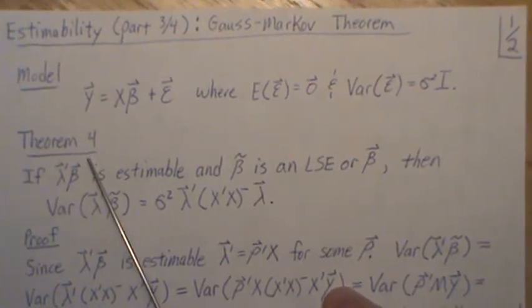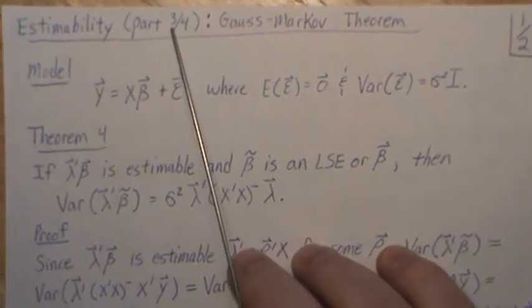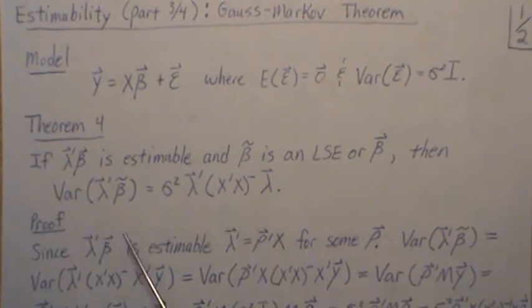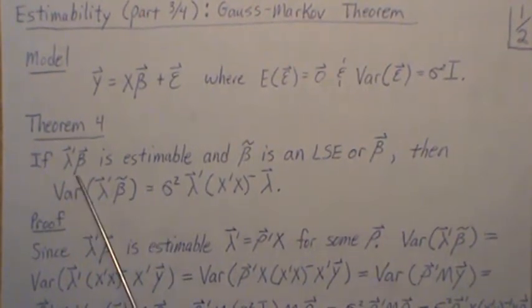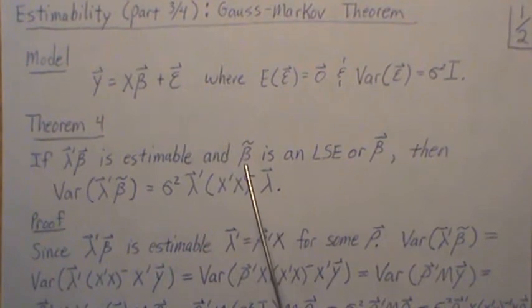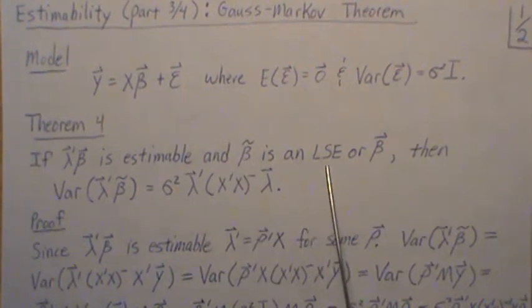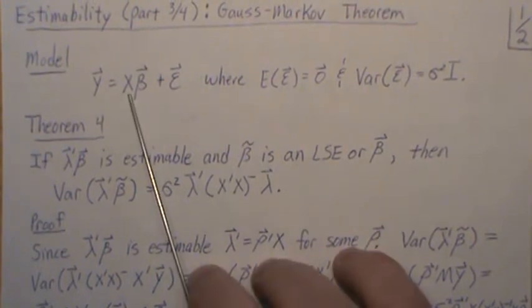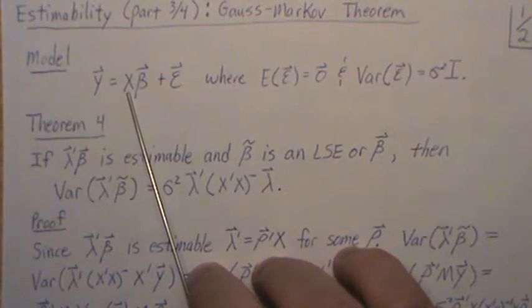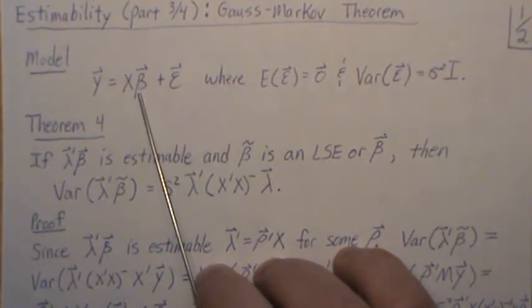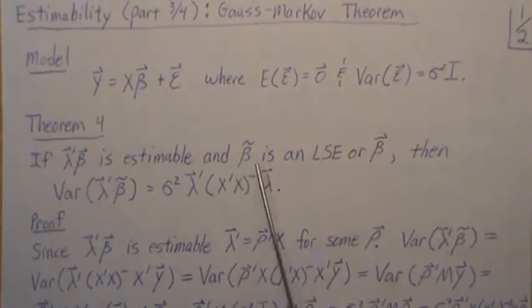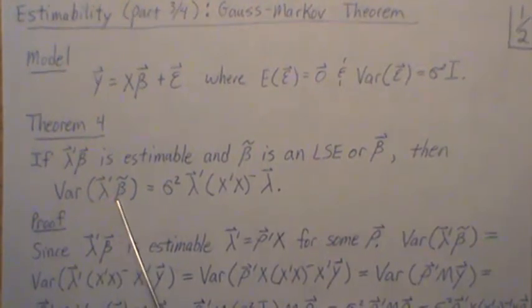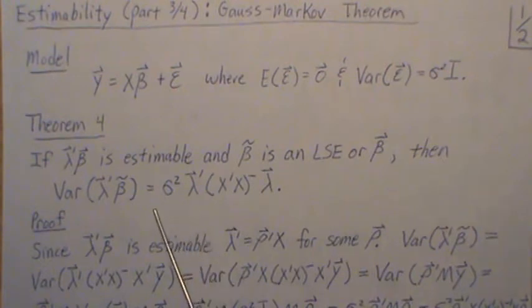Theorem 4. Theorems one, two, and three were in parts one and two, so we're on theorem four. We're going to look at the variance of an estimable function. Let's assume that lambda prime beta is estimable and beta tilde is a least squares estimate for beta, because we're in the setting where the design matrix is not full column rank, so there's an infinite number of least squares estimates for beta. Then the variance of this estimate lambda prime beta tilde is equal to this, where the dash is a generalized inverse matrix.